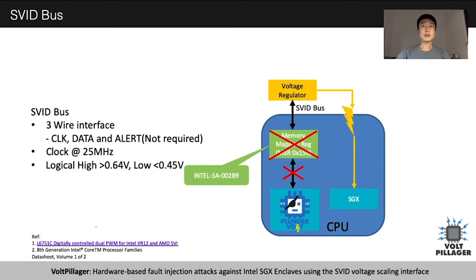From the Intel CPU datasheet, we found that this physical interface is called SVID bus. It's a three-wire interface which has clock, data, and alert — though alert is not required in the actual implementation. The clock frequency is 25 MHz, and the operating voltage is between 0V and 1V. We started our journey with SVID bus.